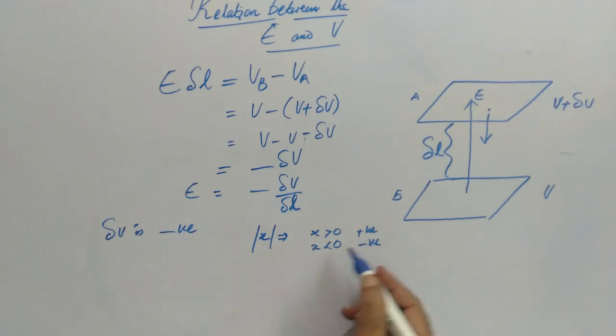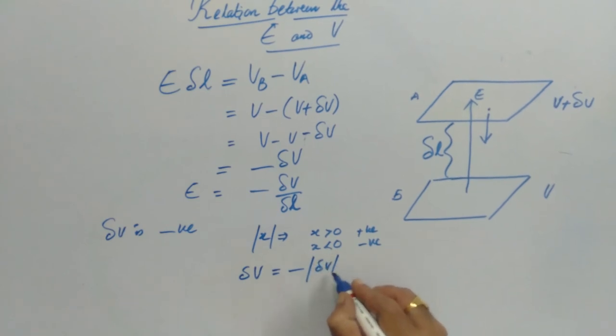Now I can write from the definition, E is equal to minus the modulus of delta V. Because if delta V is negative, then we take negative delta V times negative, which becomes delta V.